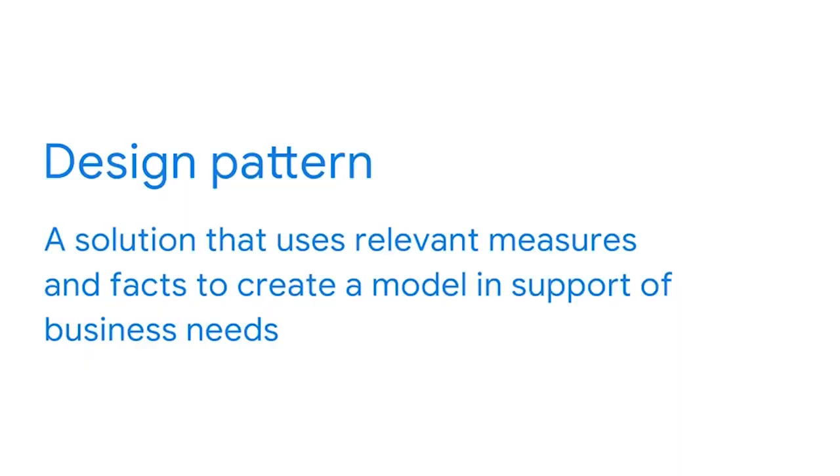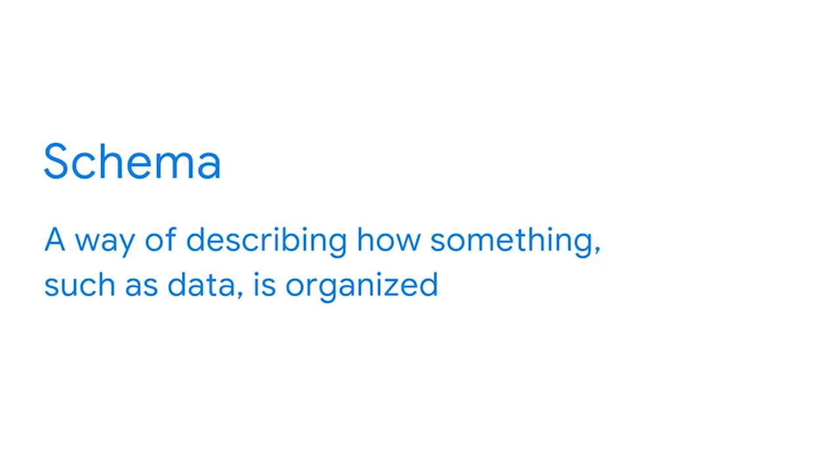Data modeling is a process of creating these tools. In order to create the data model, BI professionals will often use what is referred to as a design pattern. A design pattern is a solution that uses relevant measures and facts to create a model to support business needs. Think of it like a reusable problem-solving template, which may be applied to many different scenarios. The output of the design pattern is a database schema. A schema is a way of describing how something, such as data, is organized.